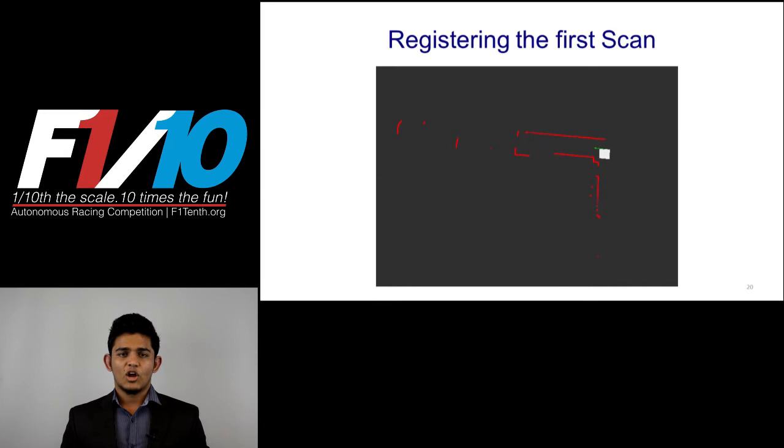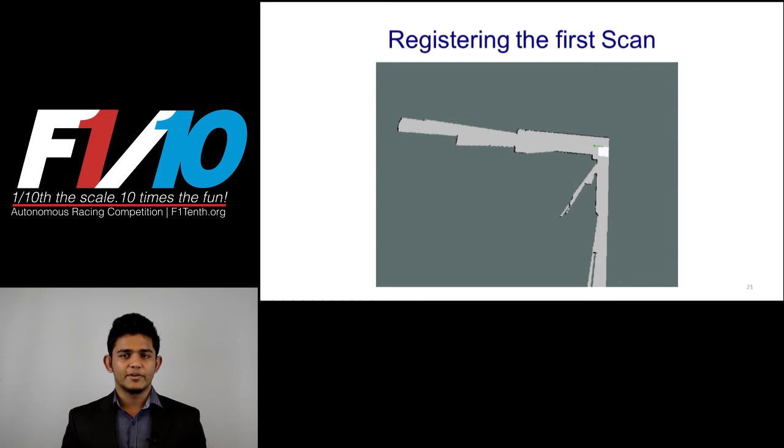Now when you start building the map, you take in the initial pose of the robot as 0,0 and update the map cells taking in the first laser scan. For example, if this image is the laser scan at initial stage, this is how the first map registration would look like. The initial map is directly updated by using the log probabilities for occupied and free cells.